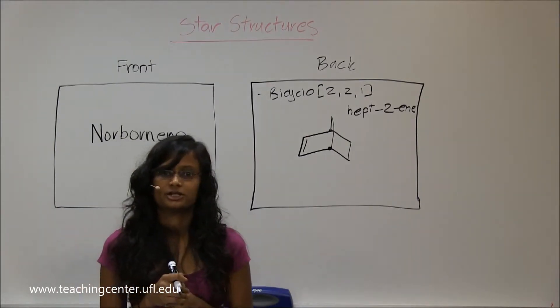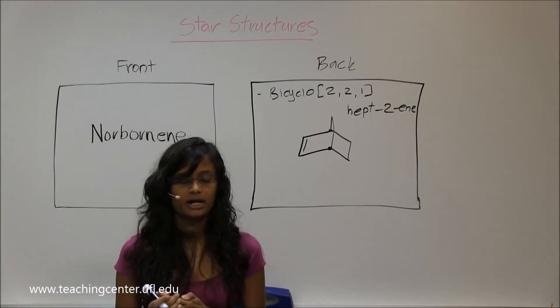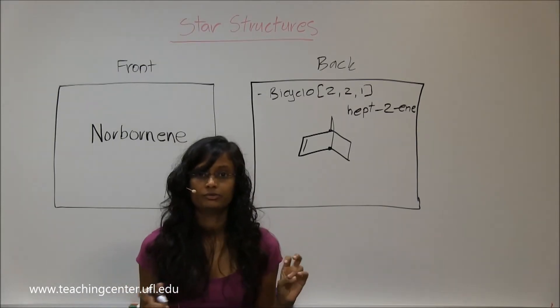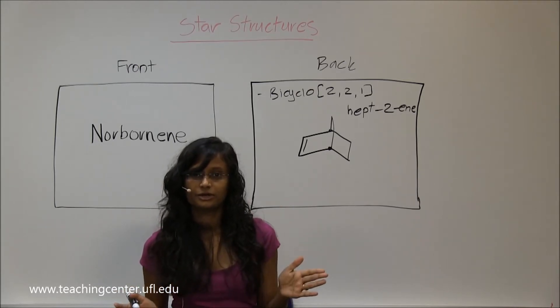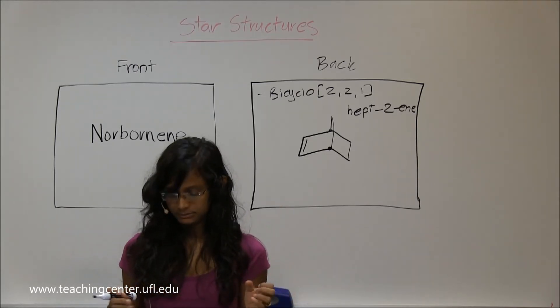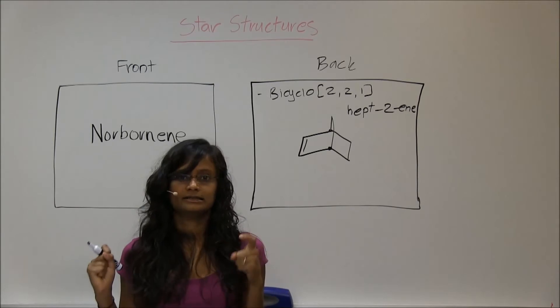There are very few bicyclic structures where he wants you to know the IUPACs. This is one of them, norbornene, which is the next one, that's one of them. And the one that we did earlier, what was that? Decalin is the other one.